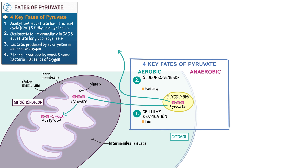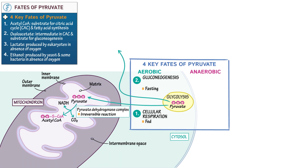Indicate that this is an irreversible reaction, catalyzed by an enzymatic complex called pyruvate dehydrogenase complex. This reaction also produces one NADH molecule and one carbon dioxide molecule as waste — remember, this is actually two NADH molecules and two carbon dioxide molecules per glucose. Draw a circle of arrows in the matrix to illustrate the citric acid cycle, and show that acetyl-CoA can enter the citric acid cycle.